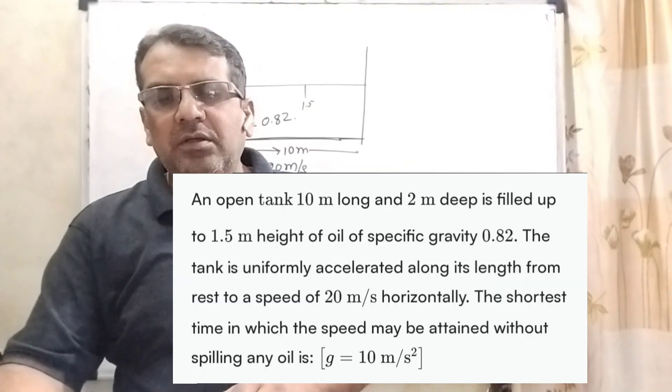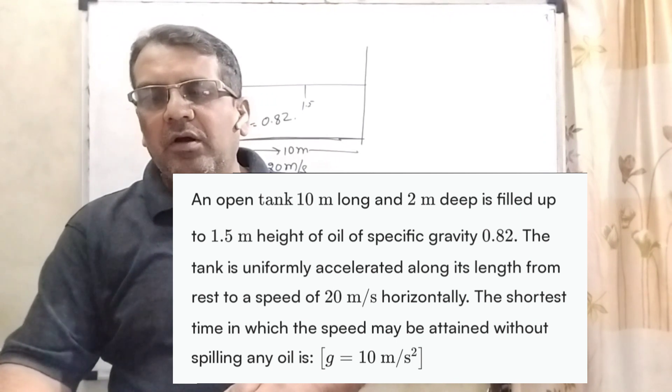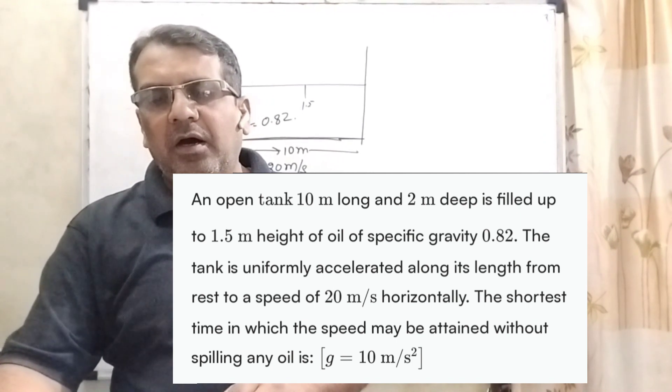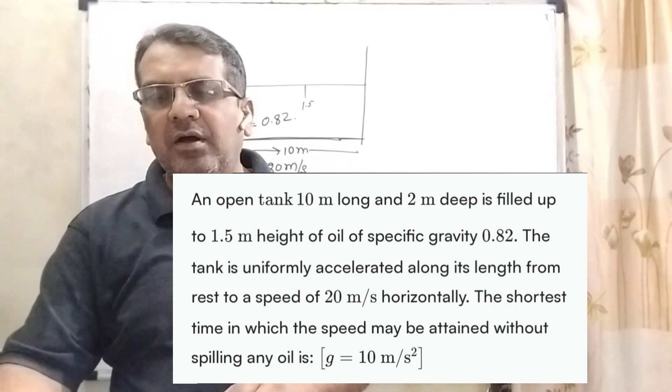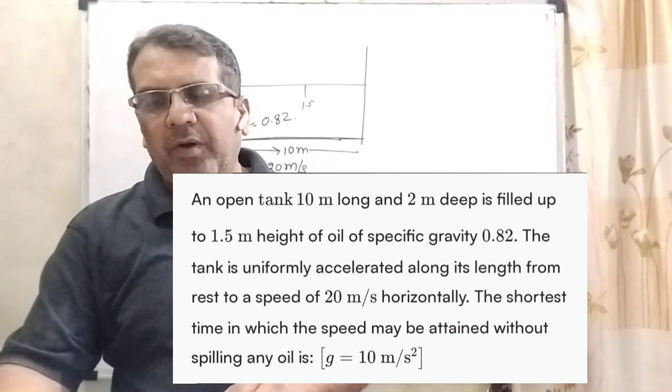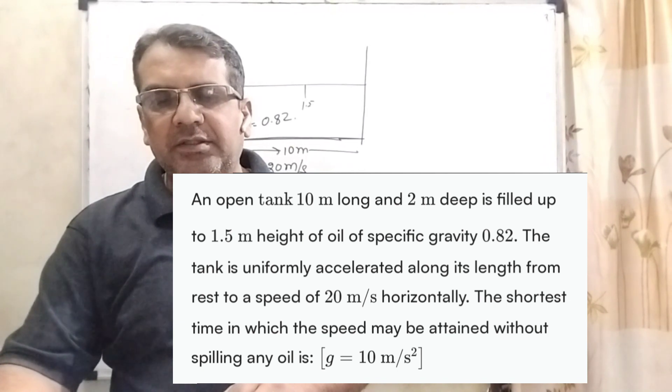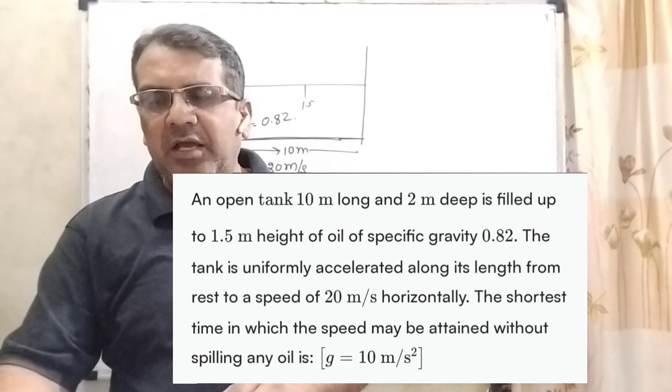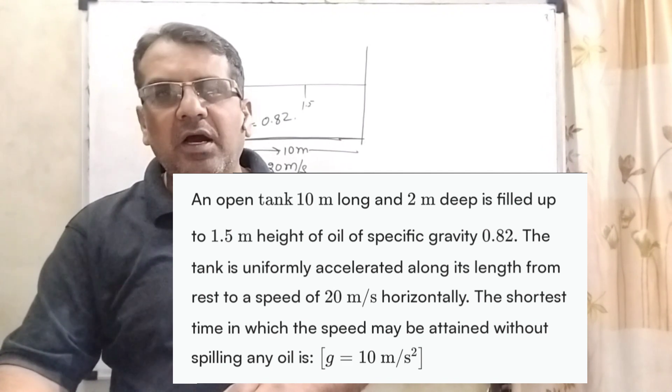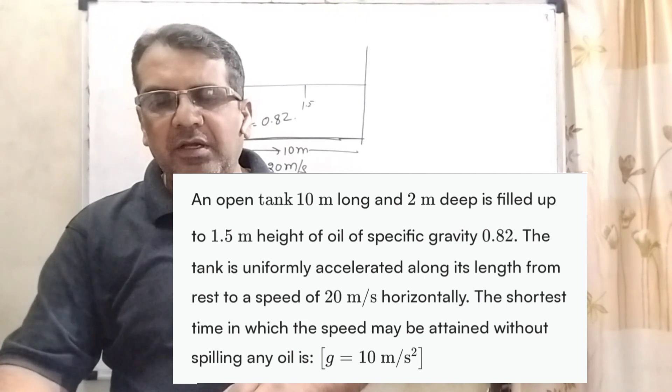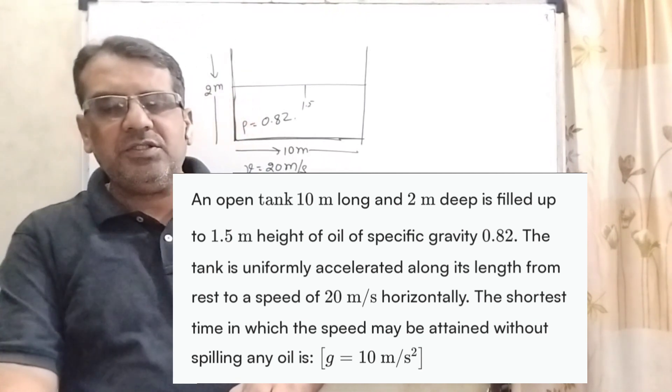Now here is the question. An open tank 10 meter long and 2 meter deep is filled up to 1.5 meter height of oil of specific gravity 0.82. The tank is uniformly accelerated along its length from rest to a speed of 20 meter per second horizontally. The shortest time in which the speed may be attained without spilling any oil is. Here we have given 4 options.